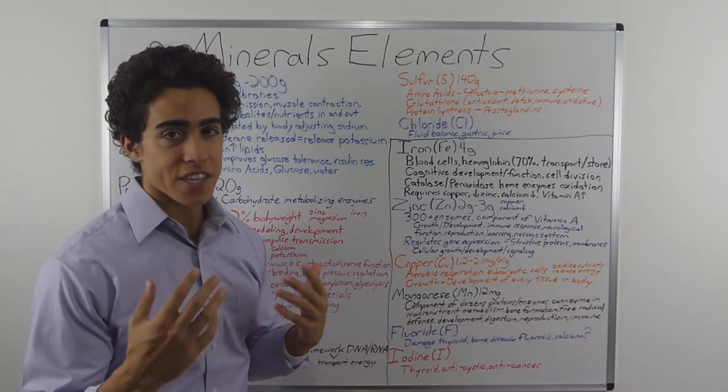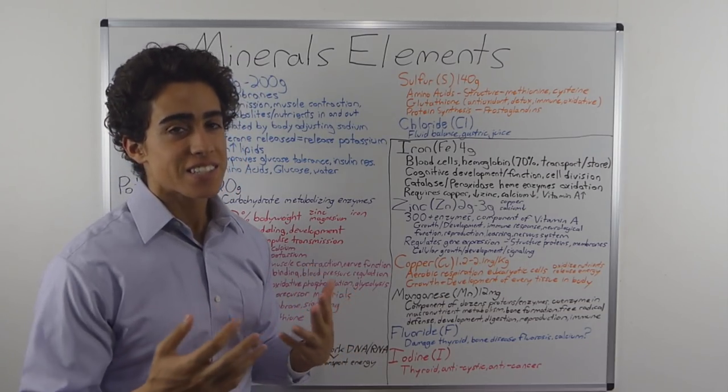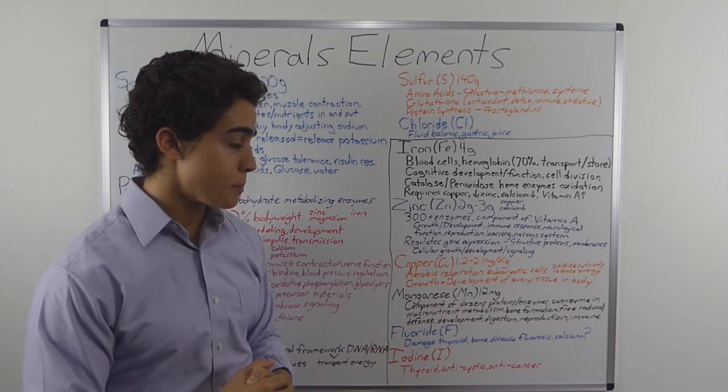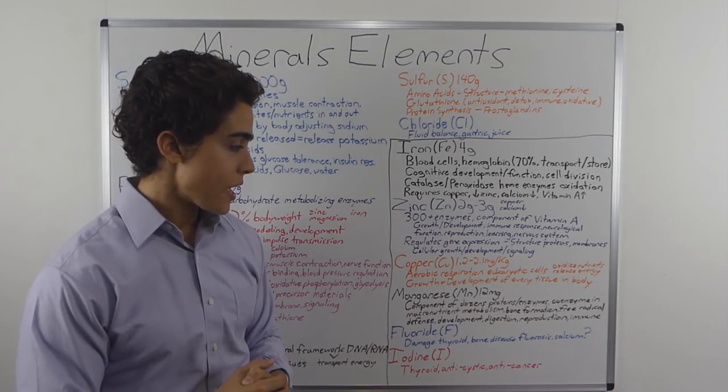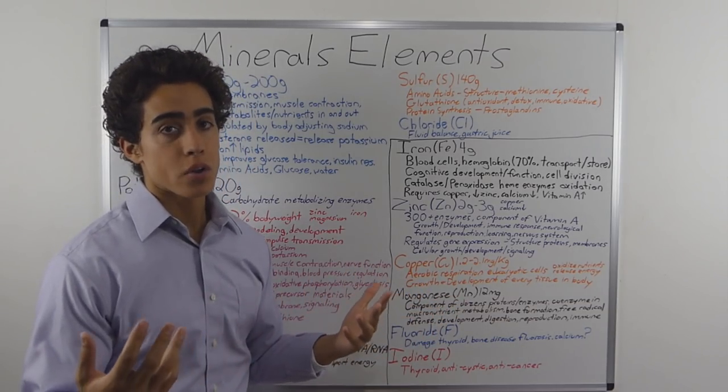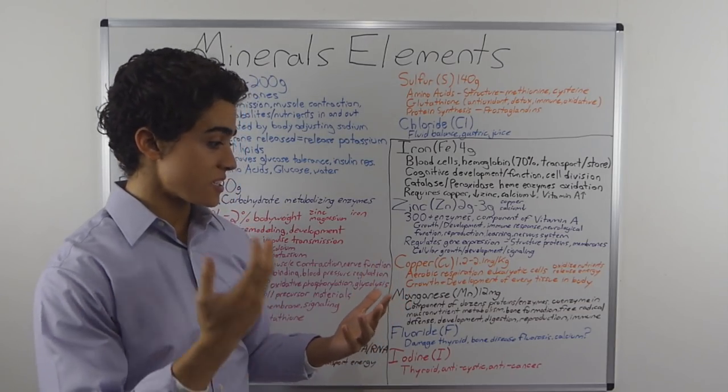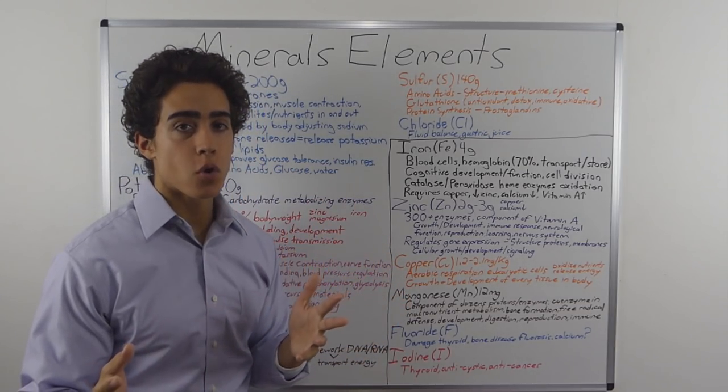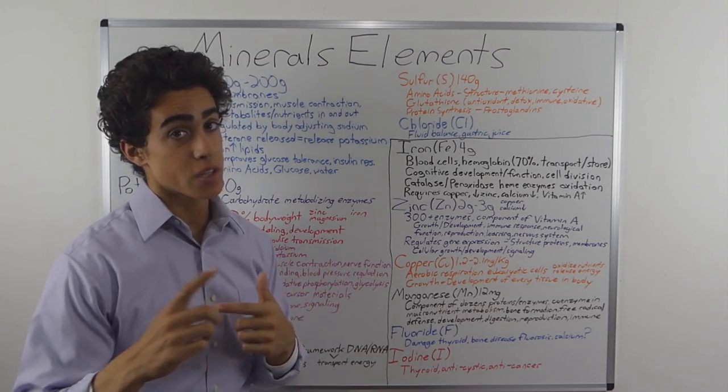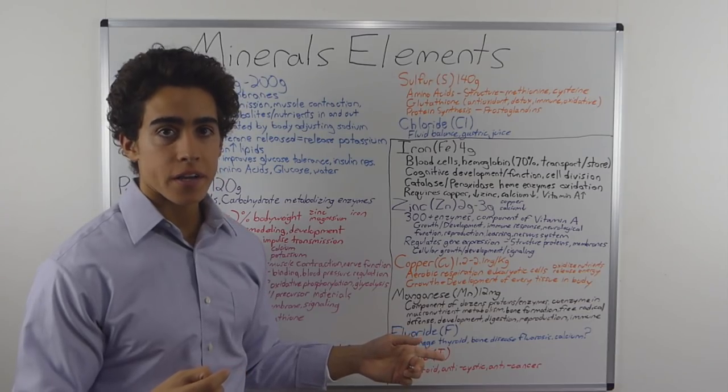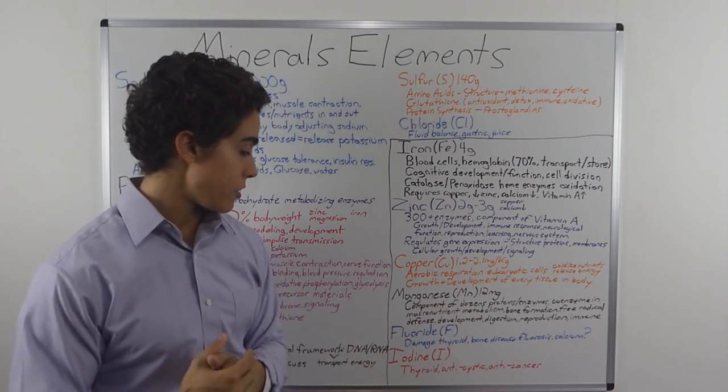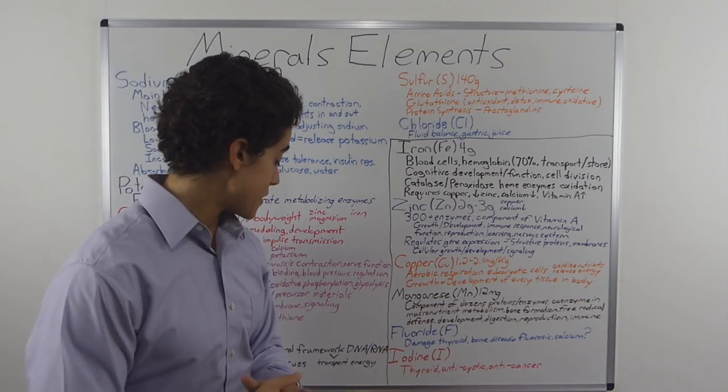Fluoride, unlike everything else we've spoken about today, doesn't seem to have anything positive. Fluoride damages your thyroid. It can cause the bone disease fluorosis. And the only thing I can speculate is that fluoride might play a role in calcium metabolism in the teeth. But there's two forms of fluoride, calcium fluoride, which naturally occurs and our body doesn't really absorb it. And then there's sodium fluoride, which is what we artificially add to water. And that is what damages our health. So out of everything we've spoken about today, ditch the fluoride.